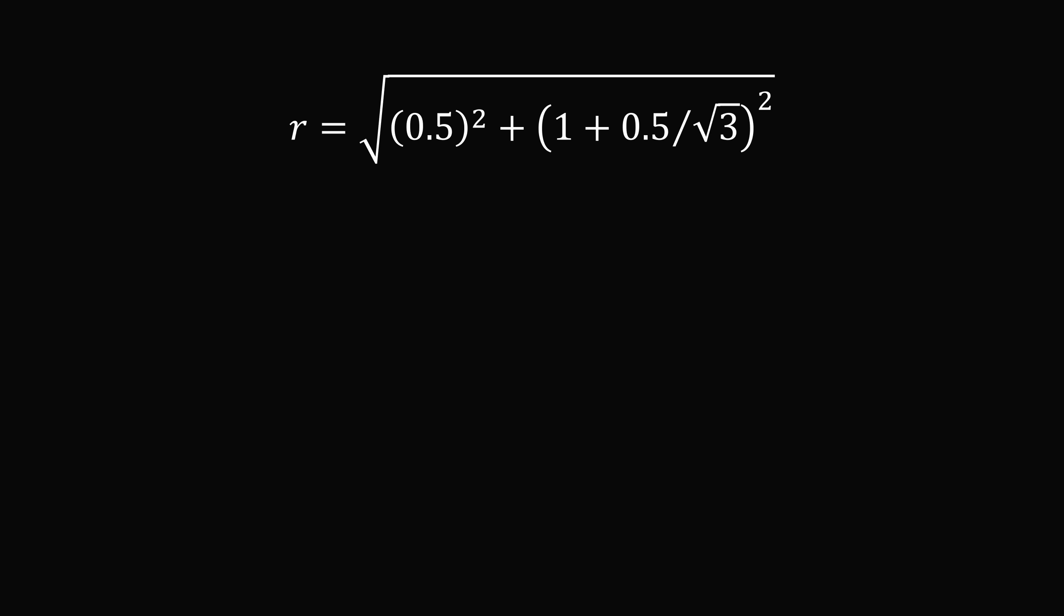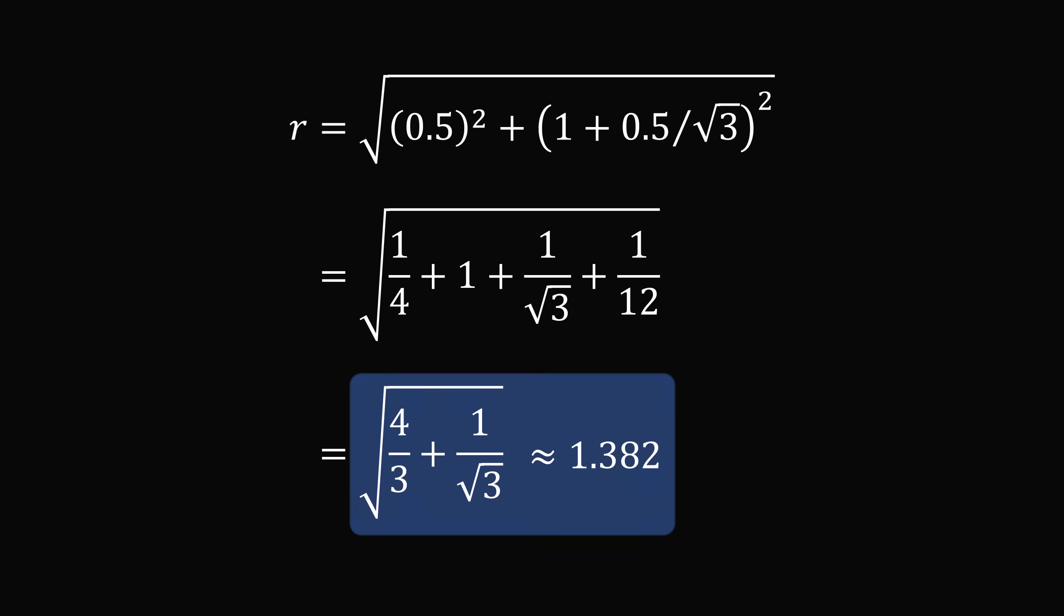We'll expand the square of the binomial, and then simplify, and then we'll group terms and take the square root. So r is equal to the square root of the quantity 4 divided by 3 plus 1 divided by the square root of 3. And that's approximately equal to 1.382. And that's the answer.